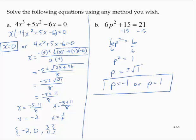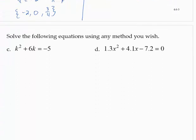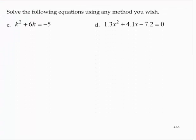The quadratic formula would have worked, but it would have been much more difficult and more chances for errors than just using the square root property. Problem c: k² + 6k = -5. Well, first thing I'm going to do is get that to 0. So I'd have k² + 6k + 5 = 0.